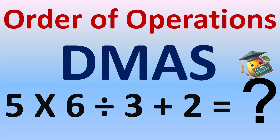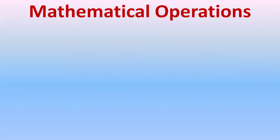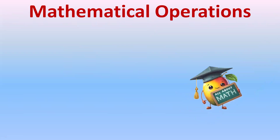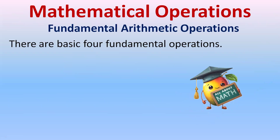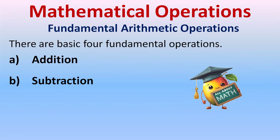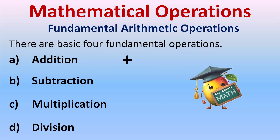Today we'll cover order of operations. Before that, we'll look at mathematical operations, also called fundamental arithmetic operations. The four basic fundamental operations are addition, subtraction, multiplication, and division. For addition we have the plus sign, subtraction the minus sign, multiplication the multiply sign, and for division the division sign.